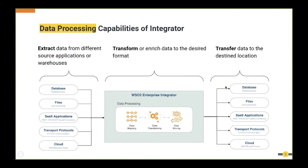After extracting and transforming data, we need to send it to the desired location — over HTTP, JMS protocol, written to files, or transferred over FTP or SFTP. Enterprise Integrator provides different options for all of these, so you can do data processing easily.